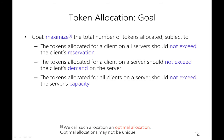The goal of the token allocation problem is to maximize the number of tokens allocated subject to the following constraints. First, the tokens allocated for a client across all servers should not exceed the client's reservation, because that's how reservation requirements are represented by tokens. Second, the tokens allocated for a client on a server should not exceed the client's demand on that server, because demand is the maximum number of requests that can be served for a client. Finally, the total tokens allocated for all clients on a server should not exceed the server's capacity. Such an allocation is called an optimal allocation, and it may not be unique — in which case we only need to find one.